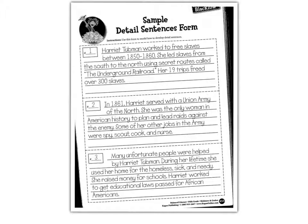Then the next thing you are going to do is come here to your detail sentence form. This is where you wrote down all of the details — supporting details — to your topic sentence. The topic sentence was on the previous form. I have one, two, three — three supporting details that are going to support my topic sentence. These are going to go in your paragraph after your topic sentence.